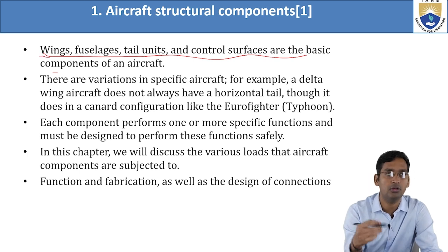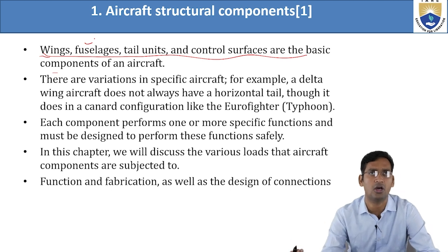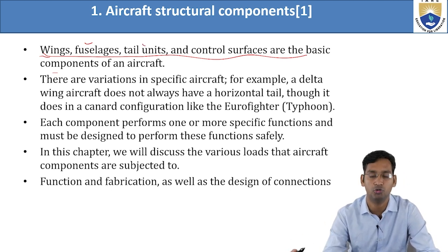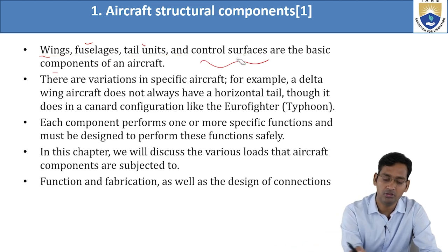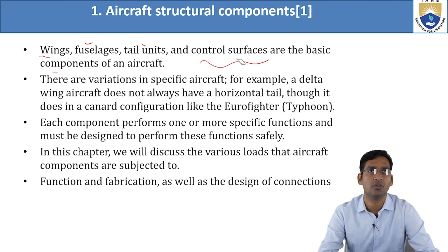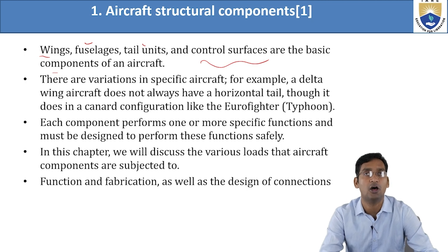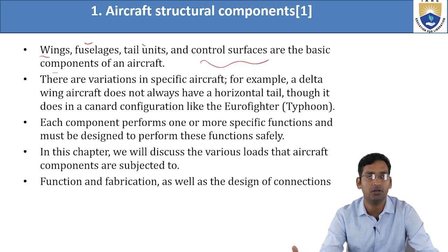Fuselage is where passengers can sit, cargo, or anything. The tail plane at the backside of the aircraft is for control, and control surfaces are located in the wing as well as the rear or tail unit. These are the four primary components of any aircraft — all four must be present.